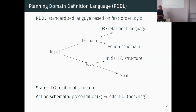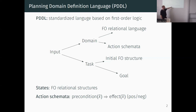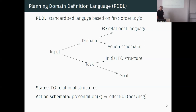The precondition is usually modeled as a conjunction of atomic formulas - like a conjunctive query. You look for parameter instantiations satisfying that query, and for those you apply the corresponding effects to your state.